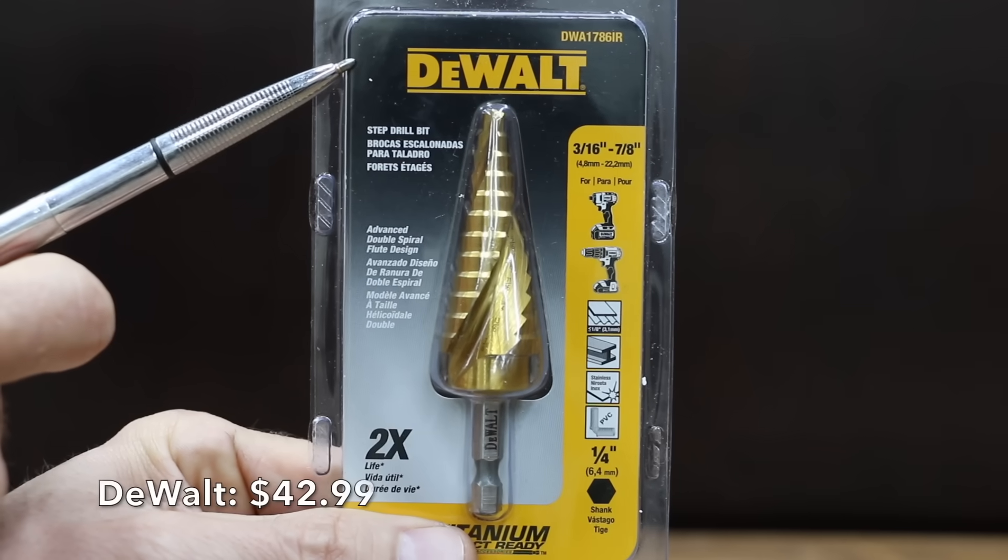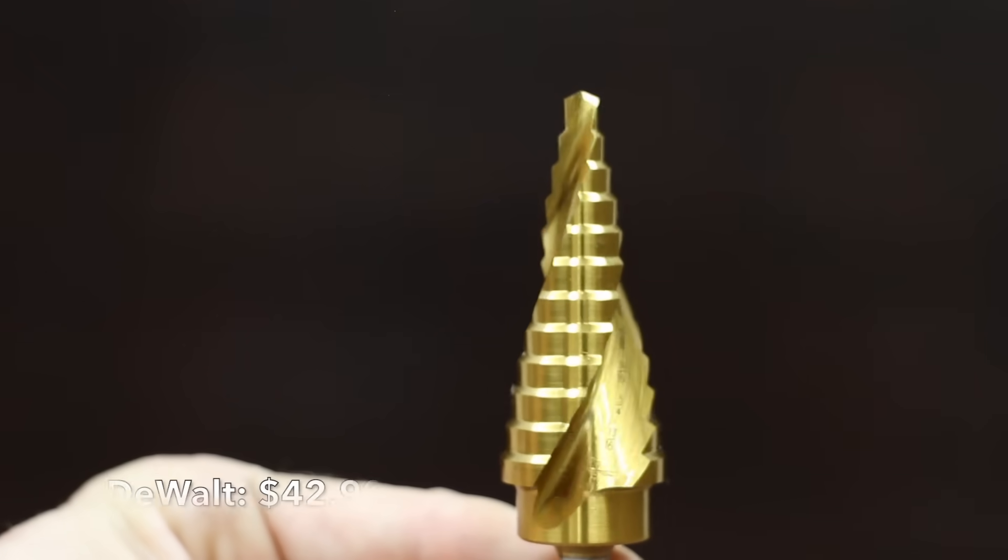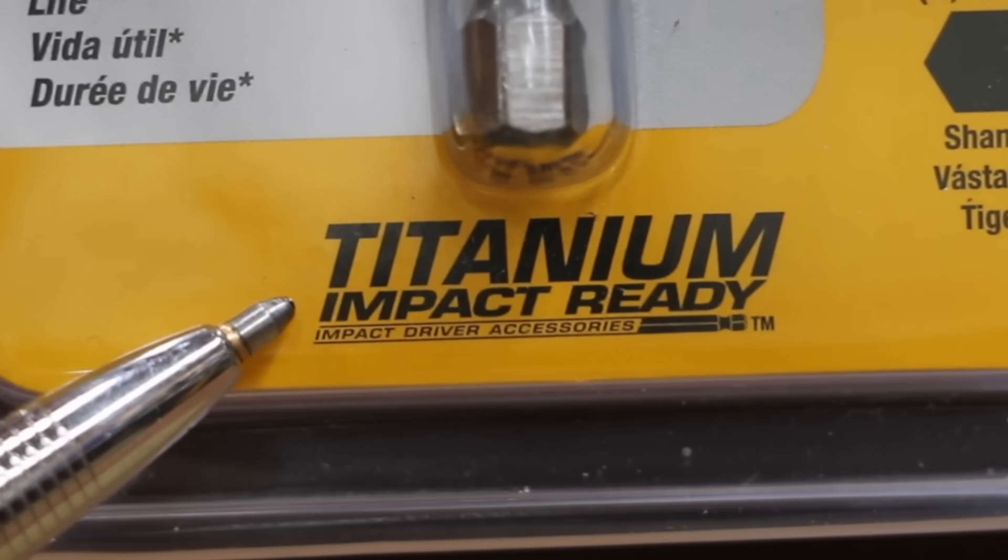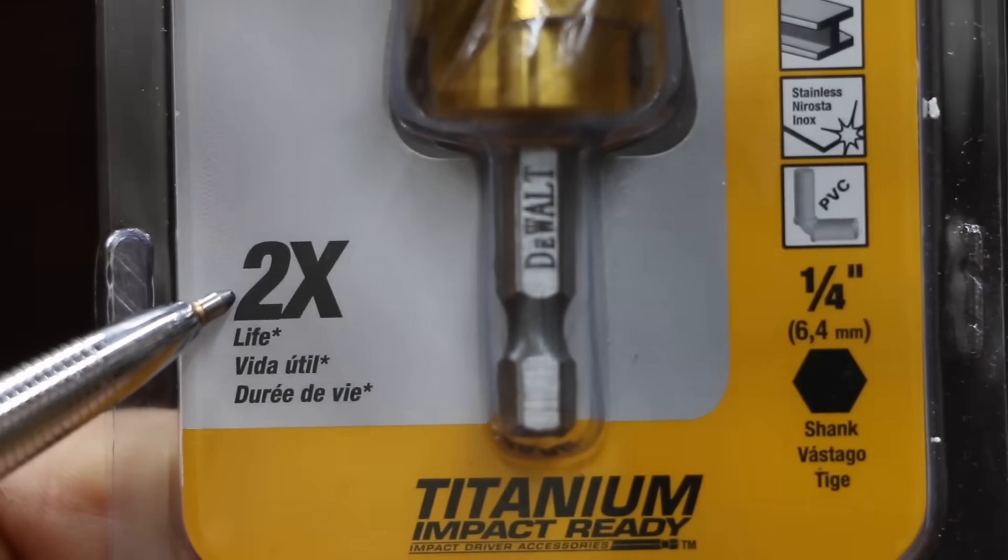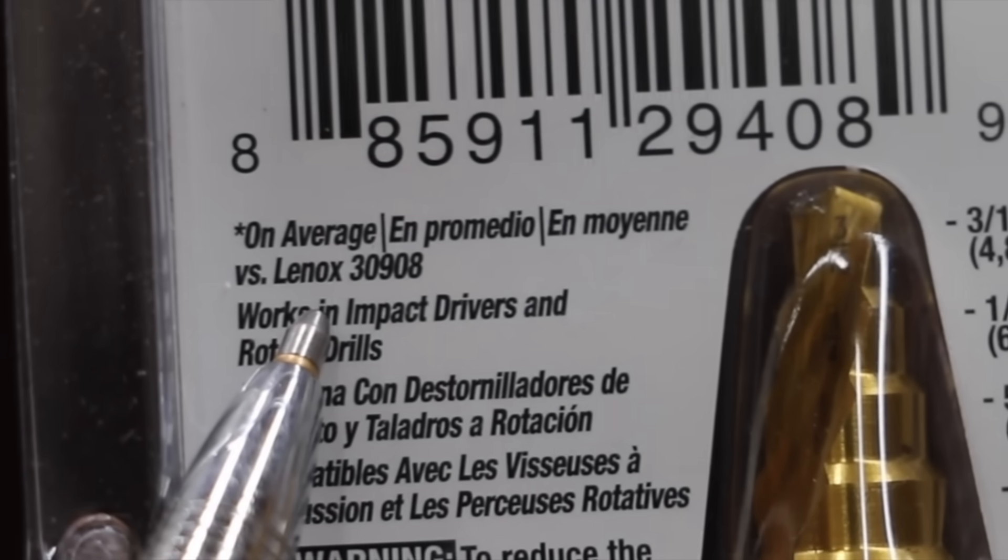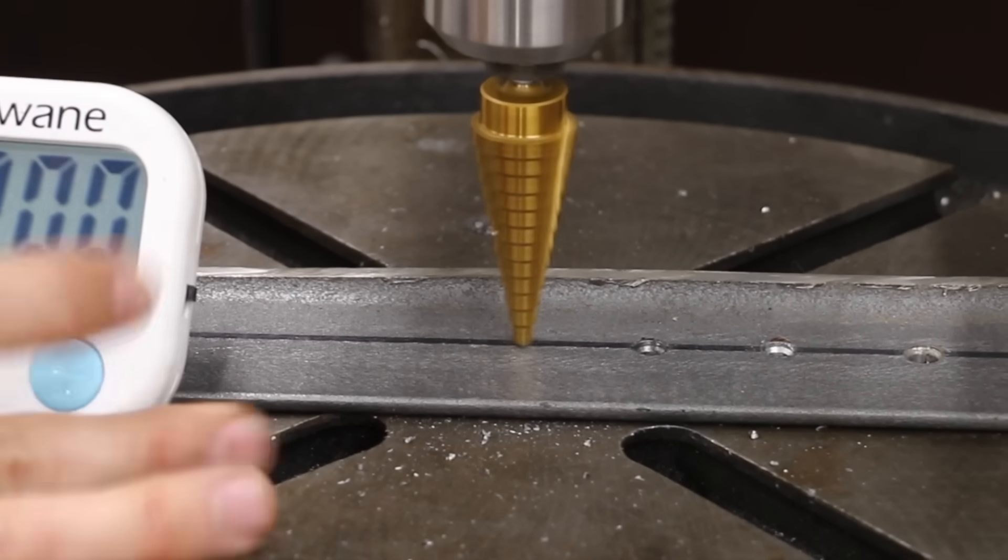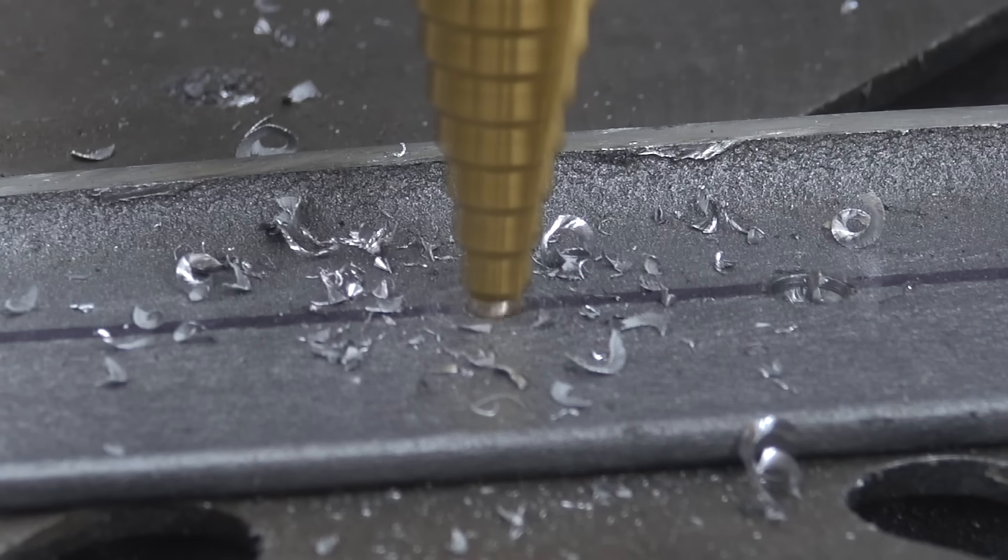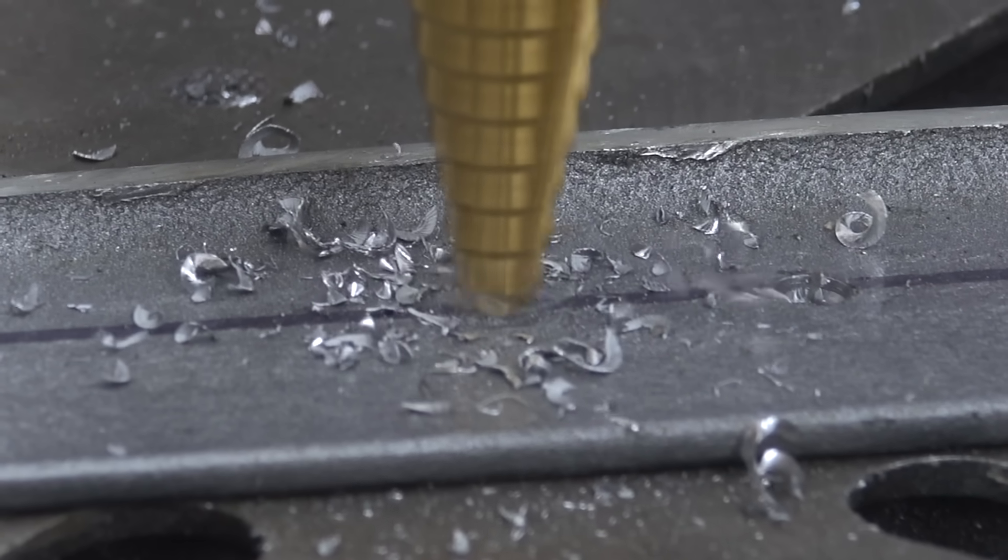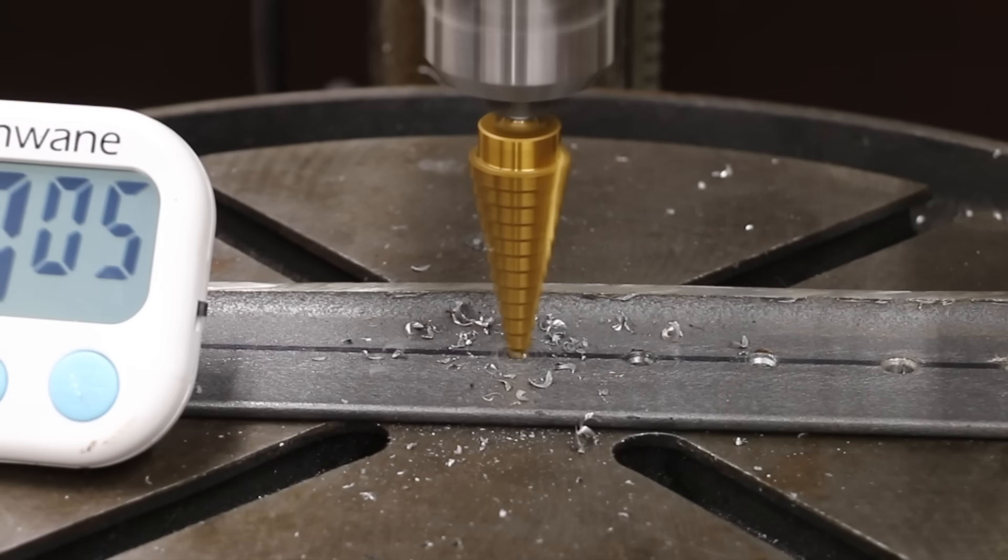The DeWalt costs $42.99 and claims to have an advanced double flute design. Unlike most of the competition, the DeWalt claims to be impact ready. It claims to offer two times the life compared to the Lennox. We're going to test that claim. Made in China. While the DeWalt brand didn't brag about being faster than the competition on its packaging, it demonstrated that it's the bit to beat, totally crushing the competition including the DeWalt twist drill with an eight second time.